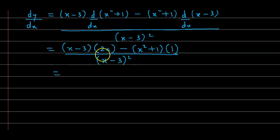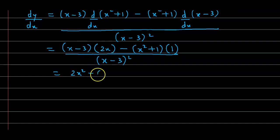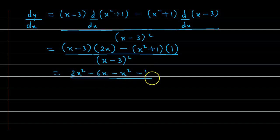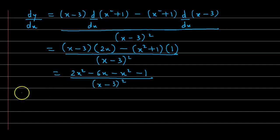Expanding further: 2x · x gives 2x², and 2x · (−3) gives −6x. Then 1 · x² is x², and with the negative sign that becomes −x². And 1 · 1 with the negative sign gives −1. Divided by (x − 3)².